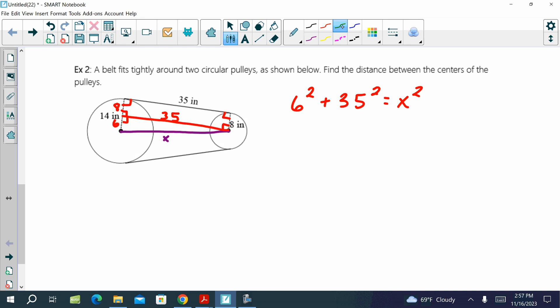Alright, 6 squared is 36. 35 squared, 1,225. And add those, what do you get? 1,261. And then what do we need to do? So X, is that perfect or is that an approximation? Approximately 35 point 5.1. And then our units are in inches. So the distance we found was 35.51 inches.